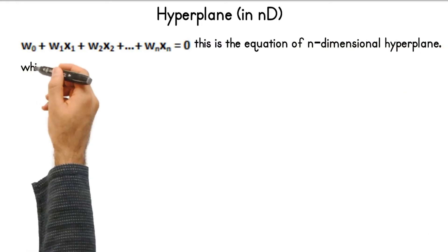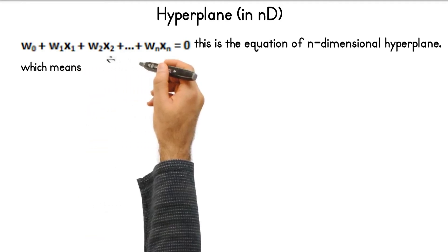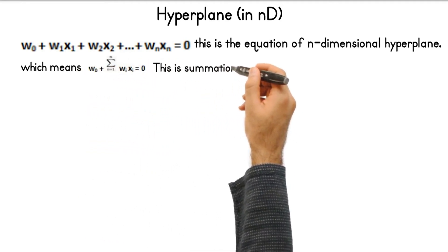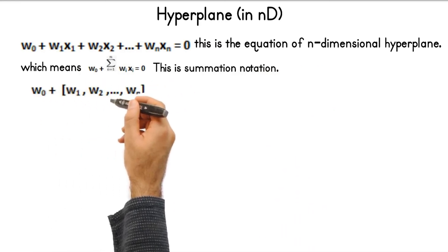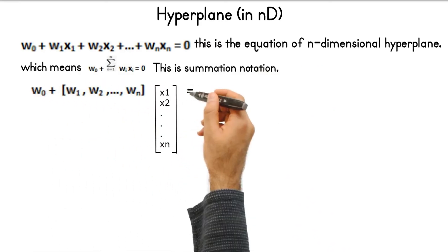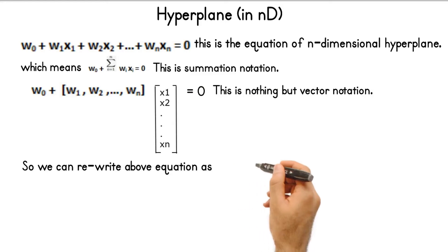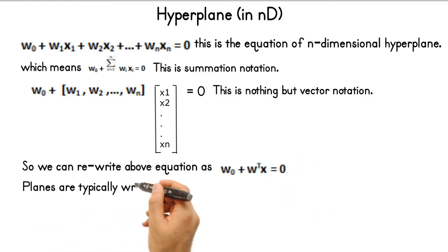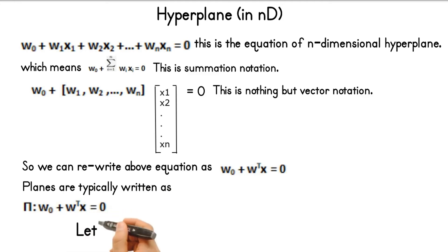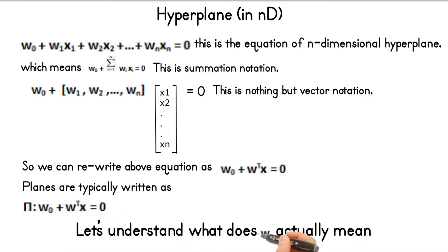We can write this equation in a more concise way as w0 + summation over i = 1 to n of wi*xi = 0. We can also write it in vector notation as w0 + [w1, w2, ..., wn] · [x1, x2, ..., xn] = 0. Here x is a vector which has n rows and 1 column, written as x of dimension n×1.